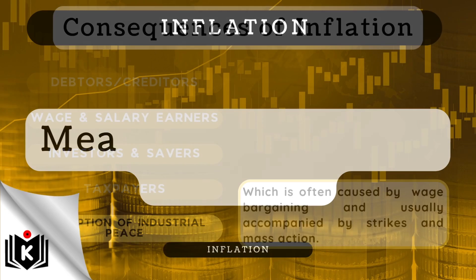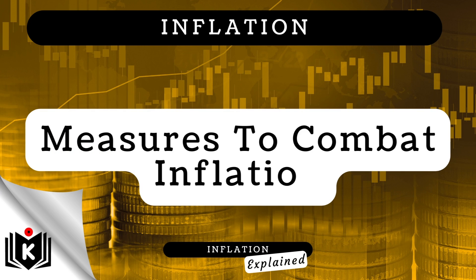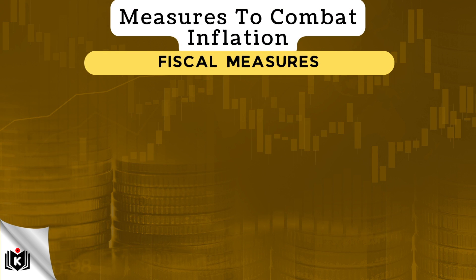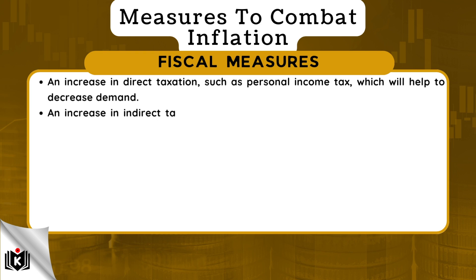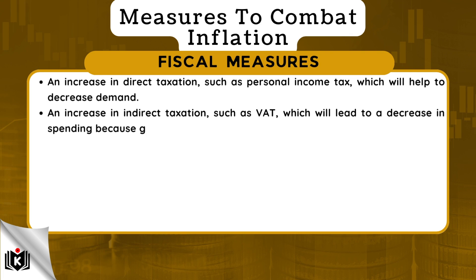There are a number of measures that the government and policy makers can use to fight inflation when it gets too high. In this next section, we highlight three types of policy measures to combat inflation. Let's start with fiscal measures. These are specific measures taken by the government, and particularly the Minister of Finance, regarding taxation and expenditure. These measures can include an increase in direct taxation, such as personal income tax, which will help to decrease demand. An increase in indirect taxation, such as VAT, which will lead to a decrease in spending because goods become more expensive.